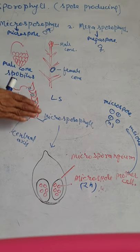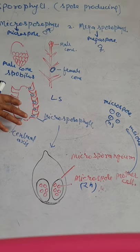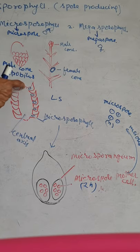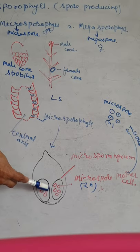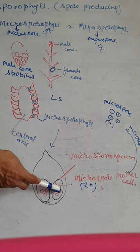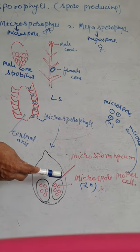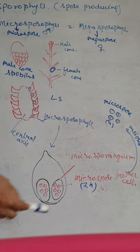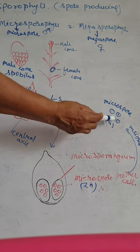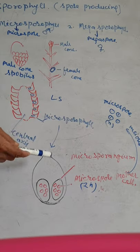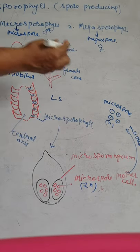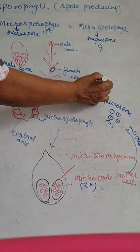In the longitudinal section of the microsporophyll, we see the spirally arranged microsporophylls around the central axis. Each microsporophyll contains two microsporangia, which contain the microspore mother cells that undergo division to produce microspores. The microspores give rise to the pollen grain.